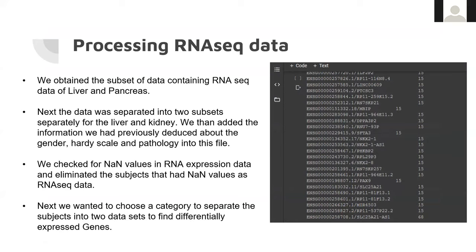The next thing we did was clean the RNA-seq data. The RNA-seq file had gene expression data for both liver and pancreas, so we first divided it into two separate subsets for each tissue. Using the previous dataset, we added values like gender, Hardy scale, and pathology. Some samples in the RNA-seq file had NaN values where no RNA information was available, so we eliminated those. We wanted to divide subjects into two groups to find differentially expressed genes, but we weren't able to do so — and that is all we have done. If we had more time, we would find the differentially expressed genes and then implement a model.